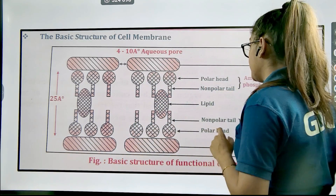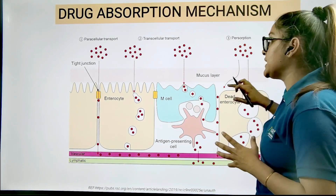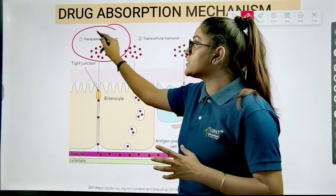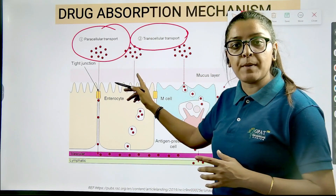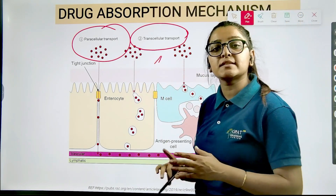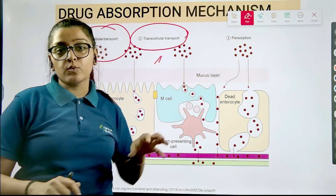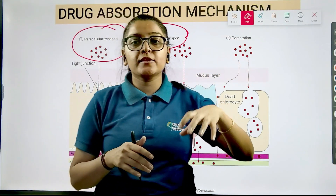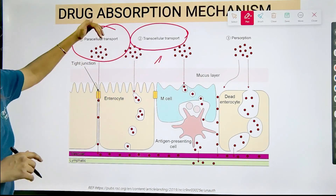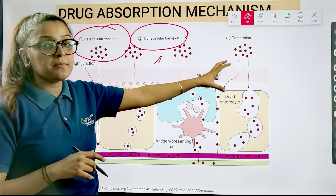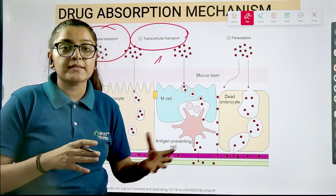For drug absorption, we have multiple transport mechanisms. Number one is paracellular transport — transport facilitated through the tight junctions. Second is the transcellular pathway — movement across the cell. Third is persorption, which is included under paracellular transport, occurring through temporary openings, such as those of a dead enterocyte, or through tight junctions between adjacent layers of cells.